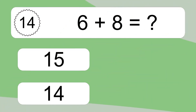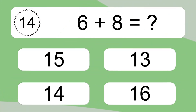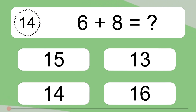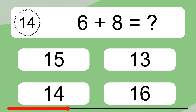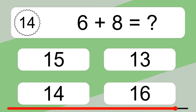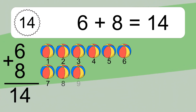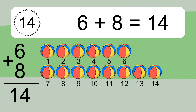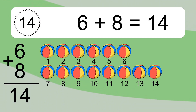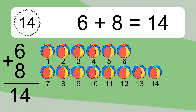6 plus 8 equals what? 6 plus 8 equals 14. Let's count it: 1, 2, 3, 4, 5, 6, 7, 8, 9, 10, 11, 12, 13, 14.